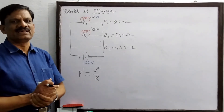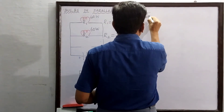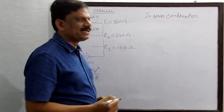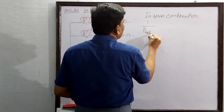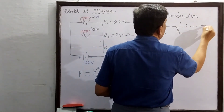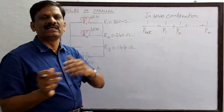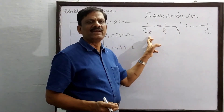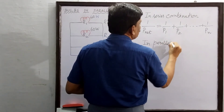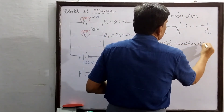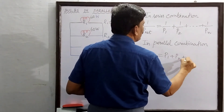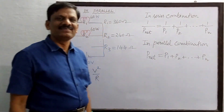As a summary: in a series combination of bulbs, the reciprocal of the net power equals the sum of the reciprocals of the individual powers — 1/P_net = 1/P1 + 1/P2 + ... + 1/Pn. In a parallel combination, the net power is directly equal to the sum of the individual powers — P_net = P1 + P2 + ... + Pn. Have a nice day, students.